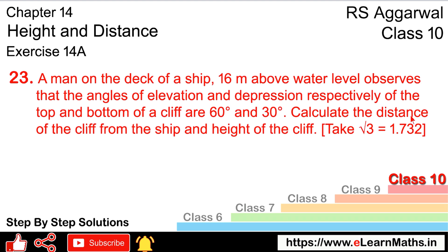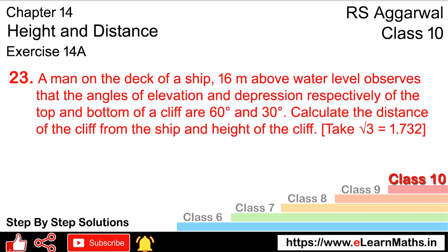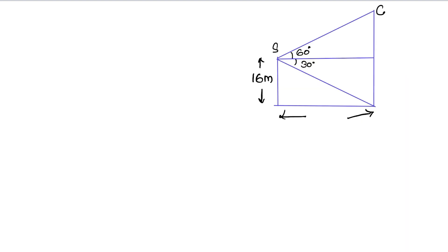We need to calculate the distance of the cliff from the ship — that is the horizontal distance between the ship and the cliff — and also the height of the cliff.